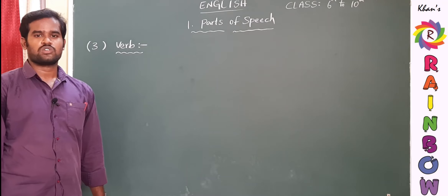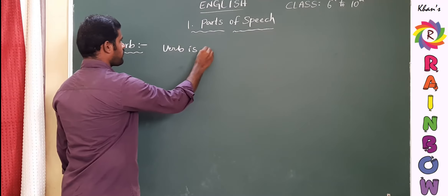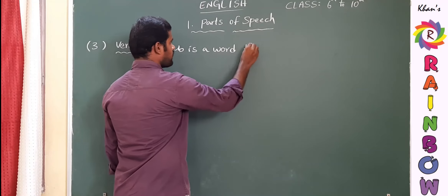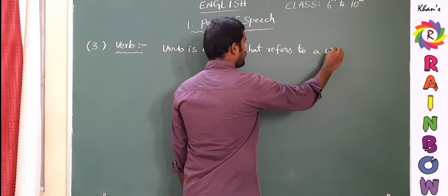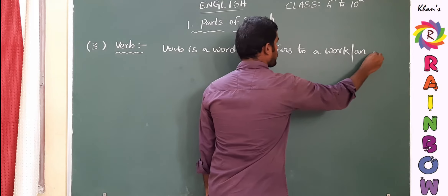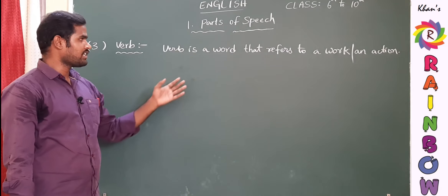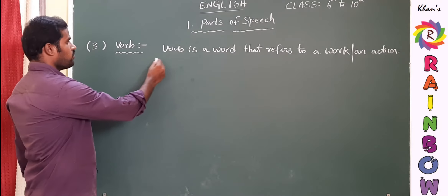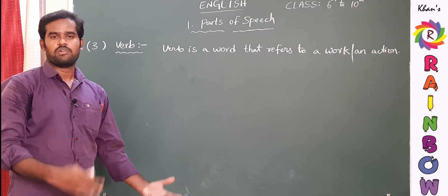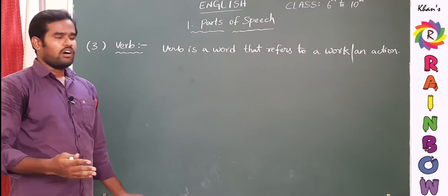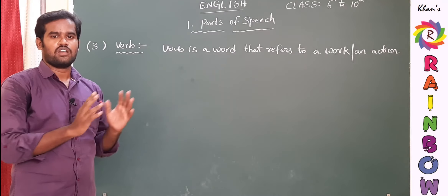What is a verb? A verb is a word that refers to a work or an action. Every day we do many works — we brush, we eat, we sleep, we read, we observe, we play. All these works come under verb. Simply, verb is nothing but work. All works are verbs and all verbs are of course works. Eating, drinking, reading, looking, observing — all works are simply verbs.